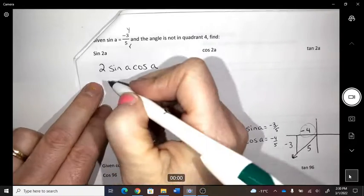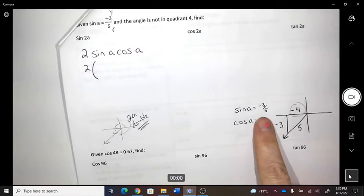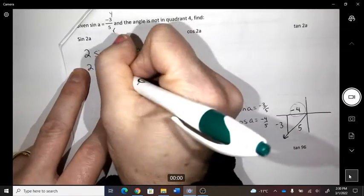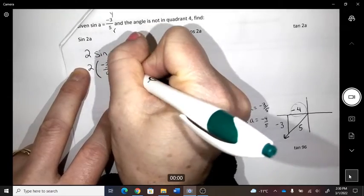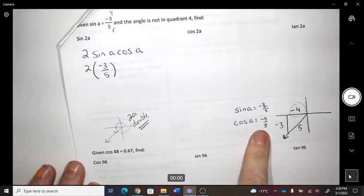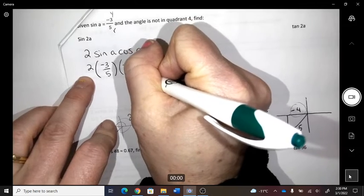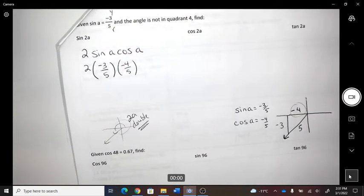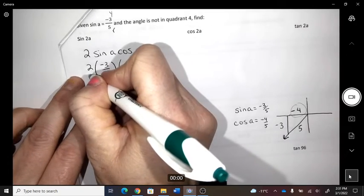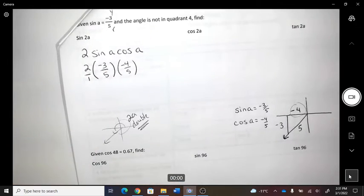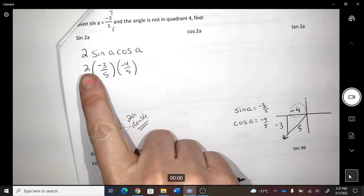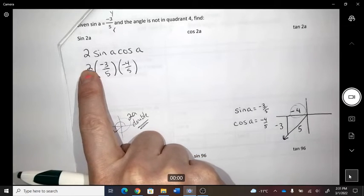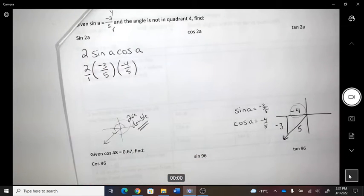What is sine of A? Negative 3 fifths. What is the cos of A? Negative 4 fifths. Maybe to help your math, you might want to throw that over 1, just to make sure you're not mixing up what to multiply. So on the top, can you make sure you're doing 2 times a negative 3 times a negative 4?